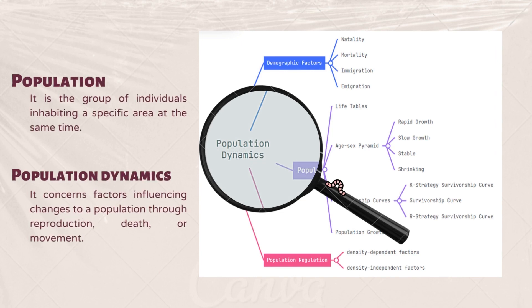According to Dr. Aimee Dupo, population is the group of individuals inhabiting a specific area at the same time. Also according to her, population dynamics concerns factors influencing changes to a population through reproduction, death, or movement.